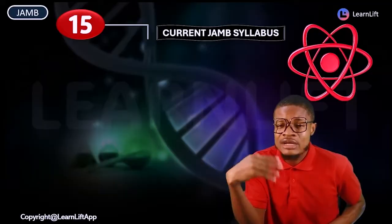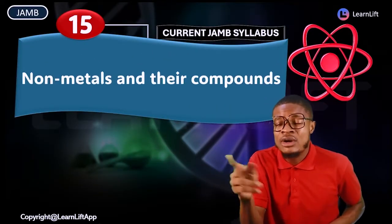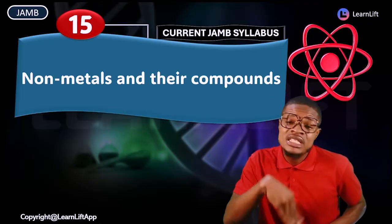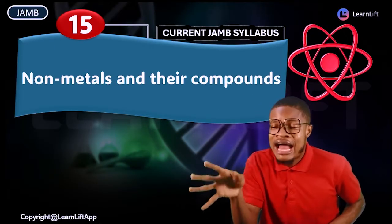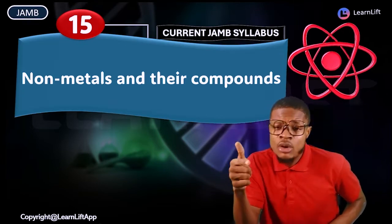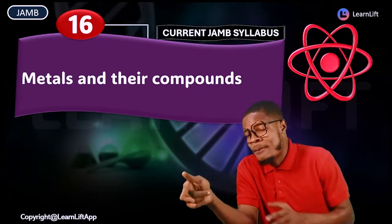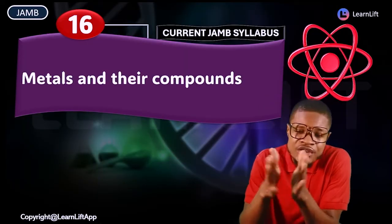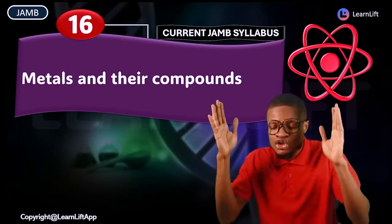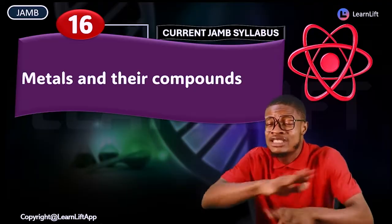Then we move into chapter fifteen: non-metals and their compounds — chlorine and its compounds, oxygen and their compounds, sulfur and its compounds — everything about non-metals in general and all their compounds. We treat all their various classes. And then chapter sixteen: metals and their compounds — all the various metals, iron and its compounds, aluminum and their compounds. Treat all of them in detail and cover all questions from the inception of exams to today.